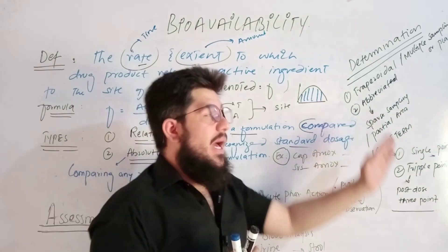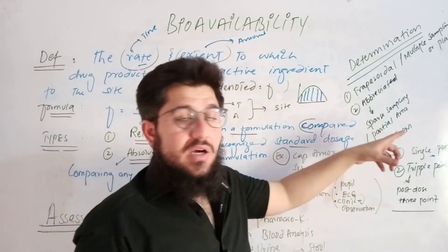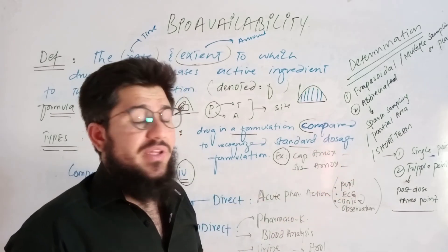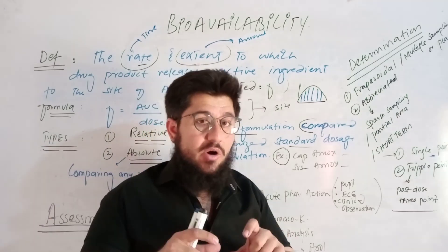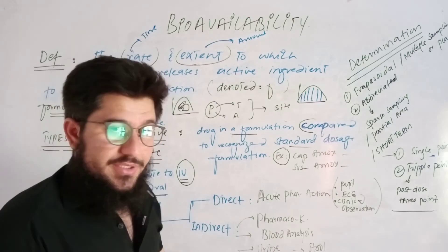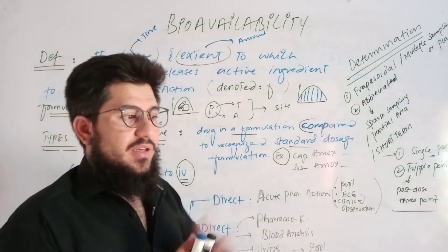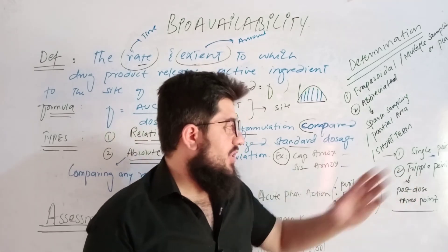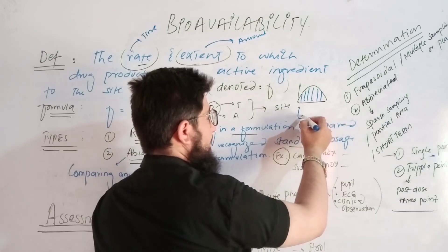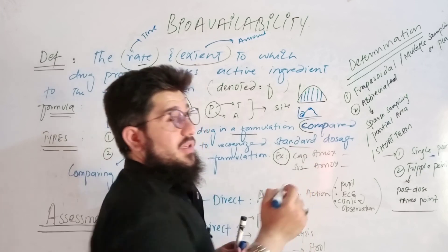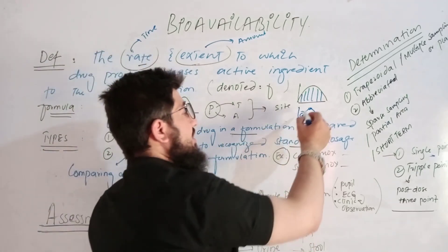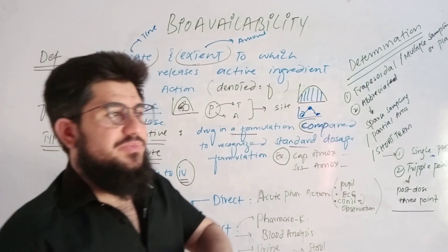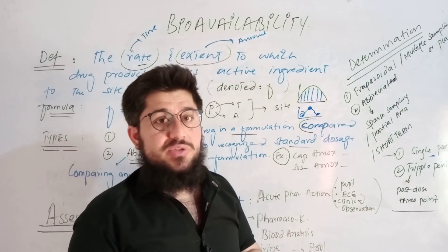The abbreviated method is also called the short-term method because 'abbreviate' means to shorten. In this method, we take either one sample or three samples. The single-point method takes one sample at Cmax — the maximum concentration point after drug administration. The triple-point method takes three samples: the first at absorption, the second at Cmax, and the third at elimination. These three points are observed for the triple-point method.